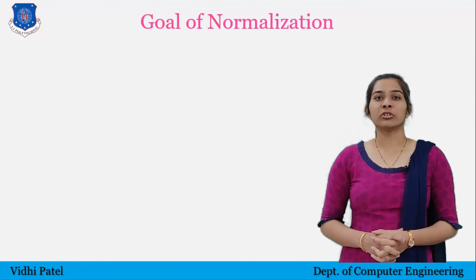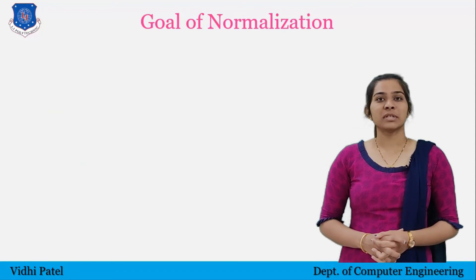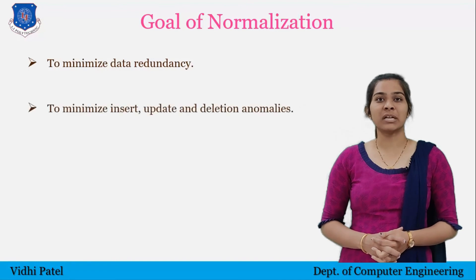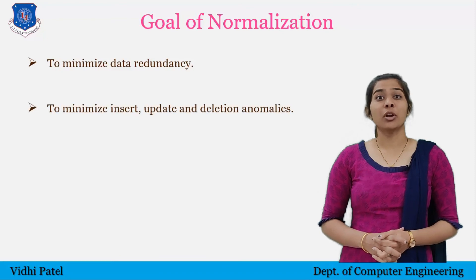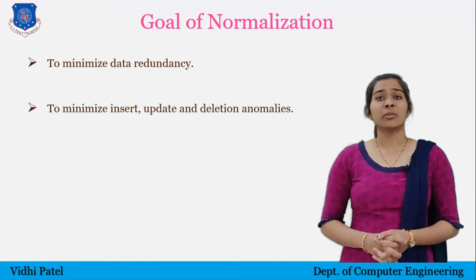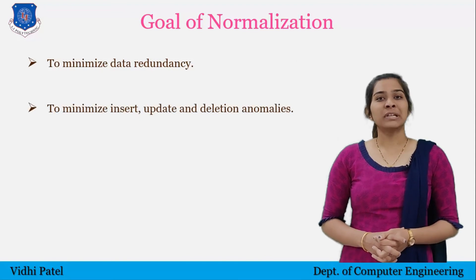The goal of normalization — or the need for normalization — is: first, to minimize data redundancy with no unnecessary duplication of data; second, to minimize insert, update, and deletion anomalies as discussed earlier; and third, to improve data integrity, scalability, and data consistency. This makes it easy to perform operations and handle complex queries. Normalization also increases clarity in organizing data in the database, requiring less storage space.